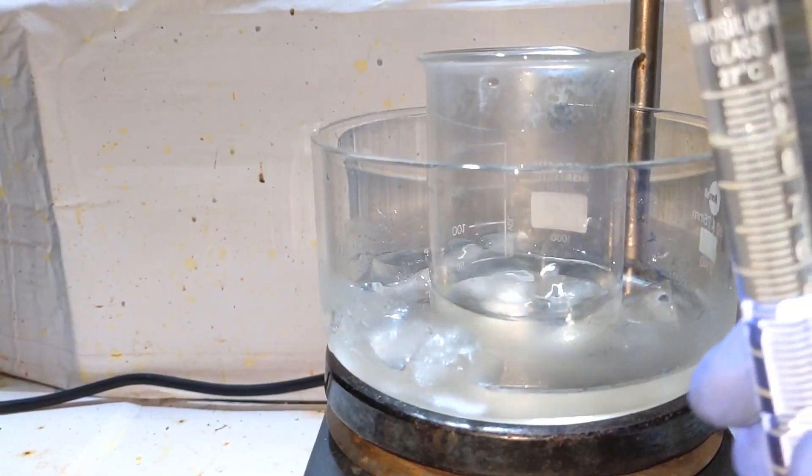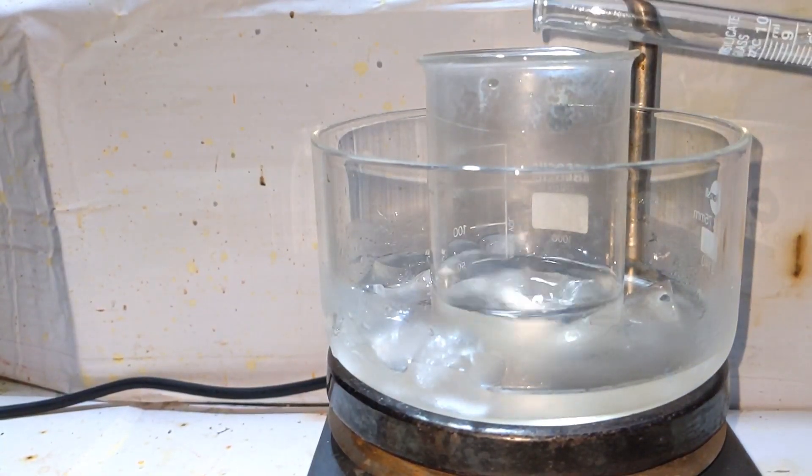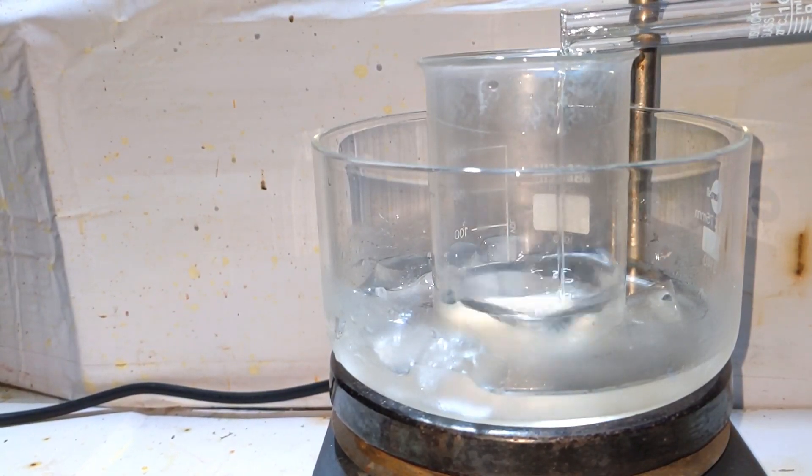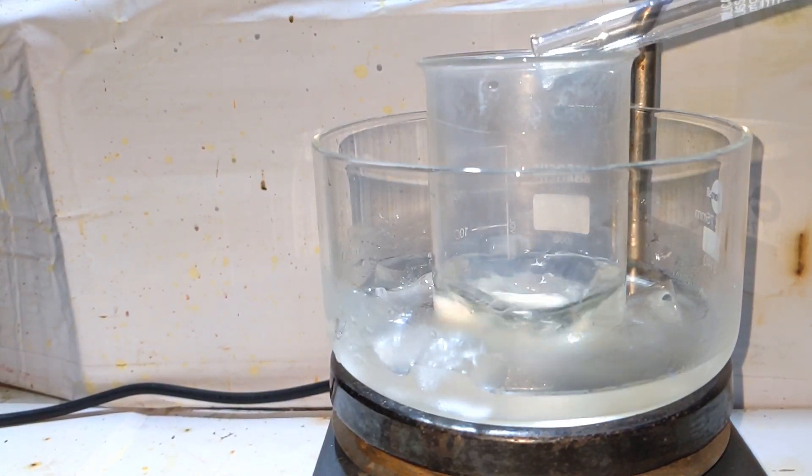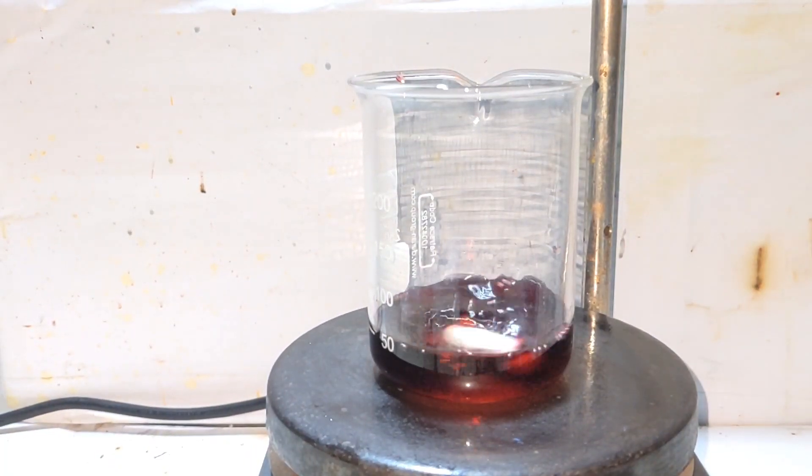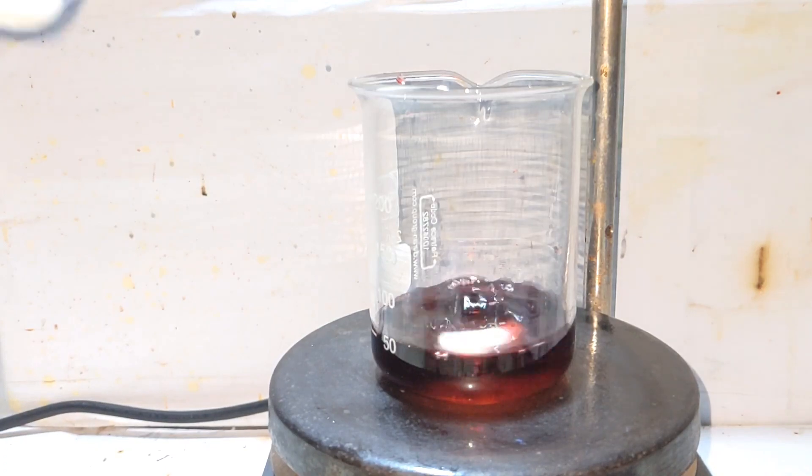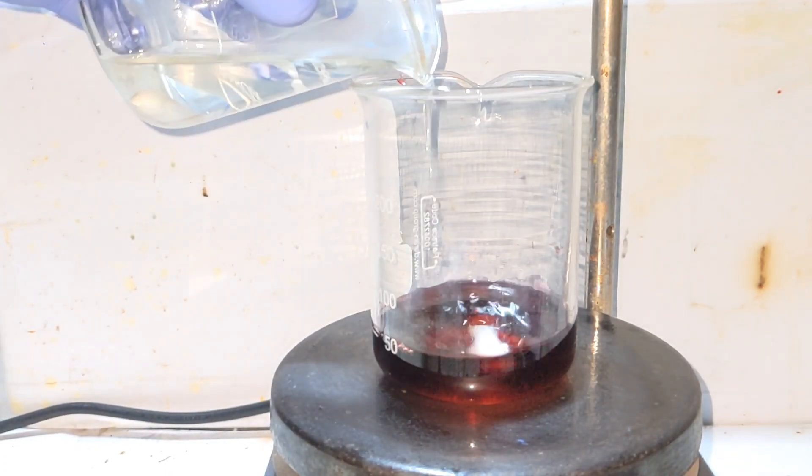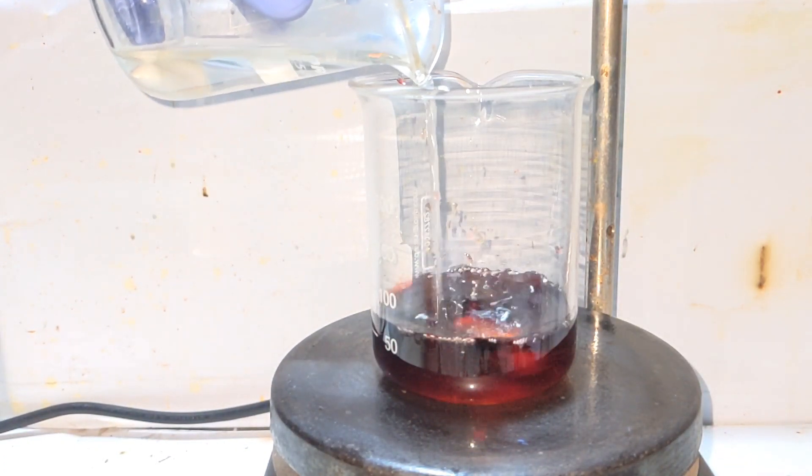Now add the 8.5 milliliters of 6 molar hydrochloric acid. Take the cobalt(II) chloride solution and into it was added the previously made ethylenediamine solution with the hydrochloric acid in it.